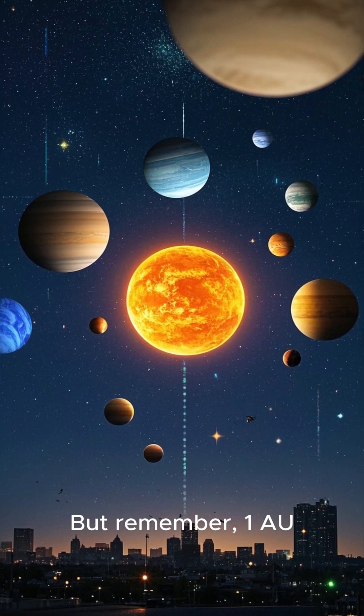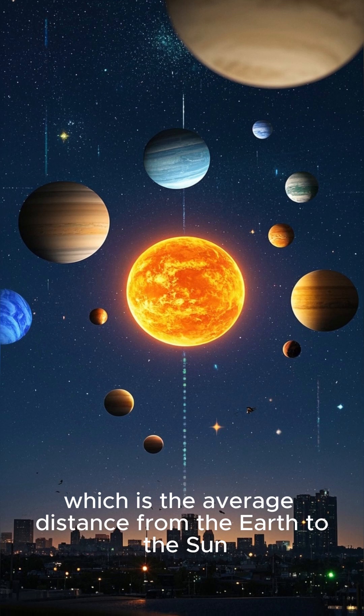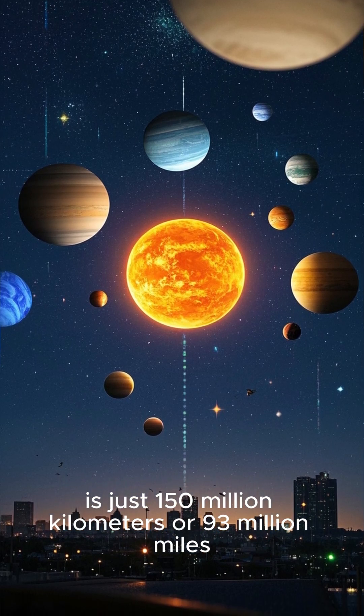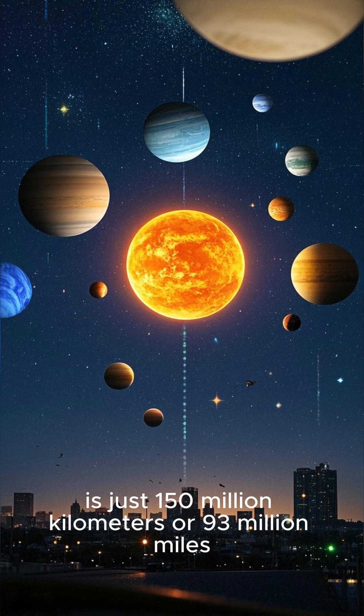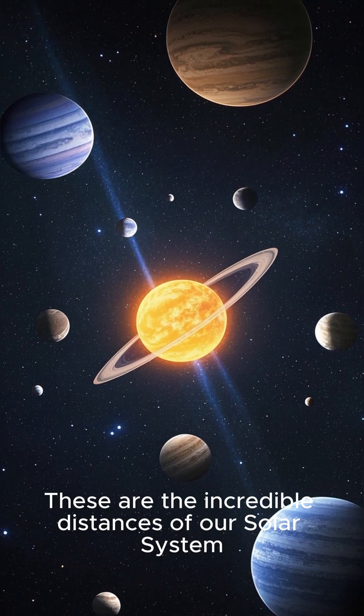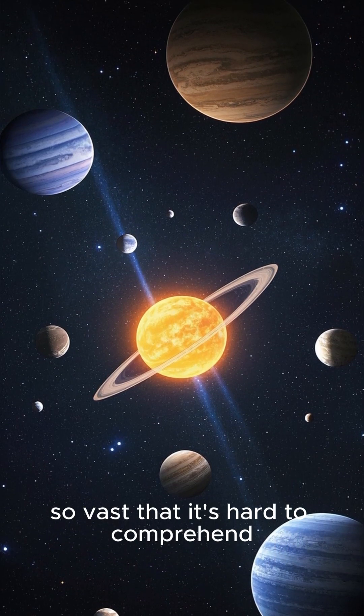But remember, one astronomical unit, which is the average distance from the Earth to the Sun, is just 150 million kilometers, or 93 million miles. These are the incredible distances of our solar system, so vast that it's hard to comprehend.